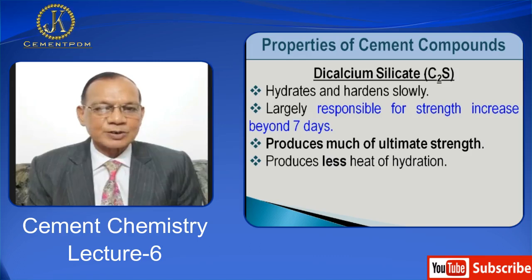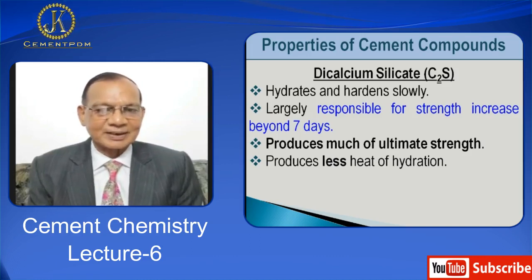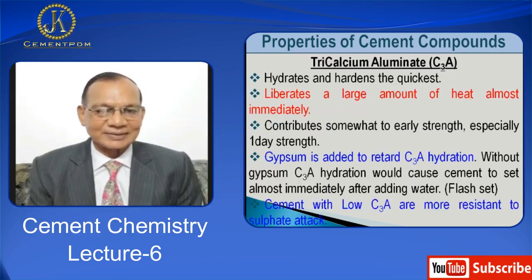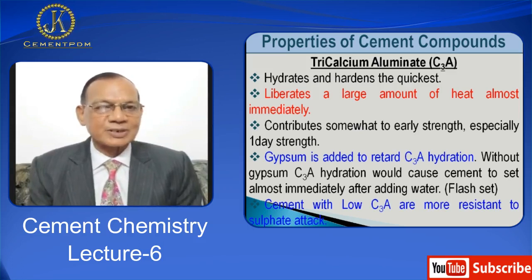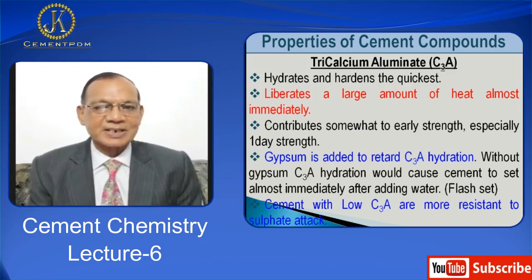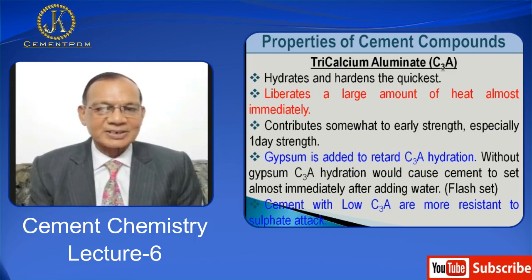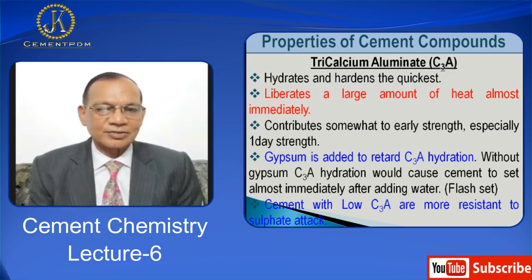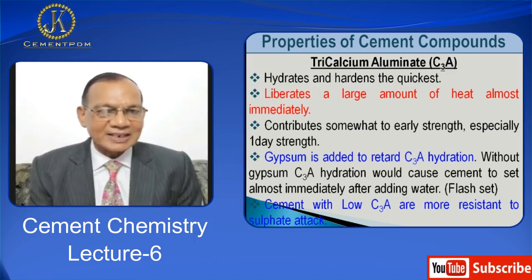C2S, or belite, hydrates and hardens slowly. It is largely responsible for strength increase beyond seven days and contributes much of the ultimate strength, producing less heat of hydration. Tricalcium aluminate C3A hydrates and hardens the quickest, liberating a large amount of heat almost immediately, and contributes somewhat to early strength, especially one-day strength. Gypsum is added to retard C3A hydration; without gypsum, C3A hydration would cause cement to set almost immediately after adding water. Cements with low C3A are more resistant to sulphate attack.